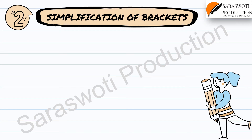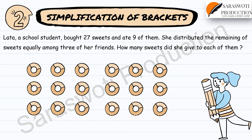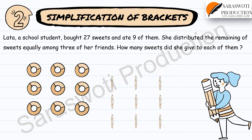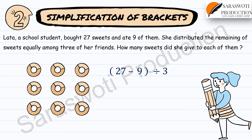Now comes the simplification of brackets. Lutta, a school student, bought 27 sweets and ate 9 of them. She distributed the remaining sweets equally among 3 of her friends. We must subtract the 9 sweets Lutta ate from 27 before dividing among 3 friends — so we write (27 minus 9) in brackets, divided by 3. This means we perform the operation inside the brackets first, then proceed to any other operation.